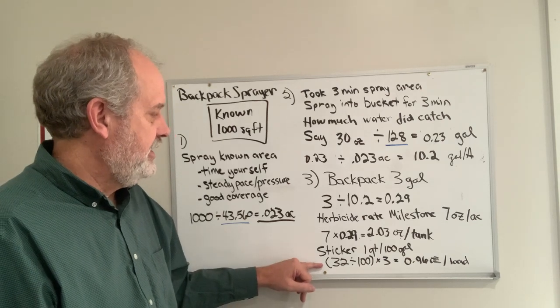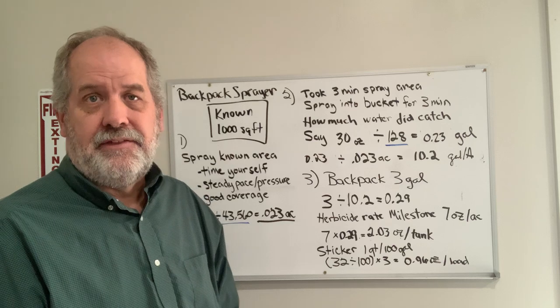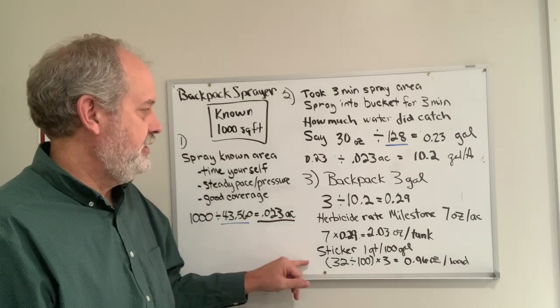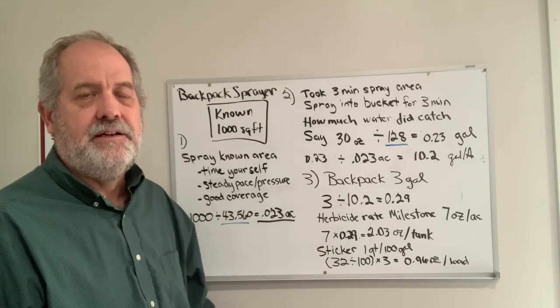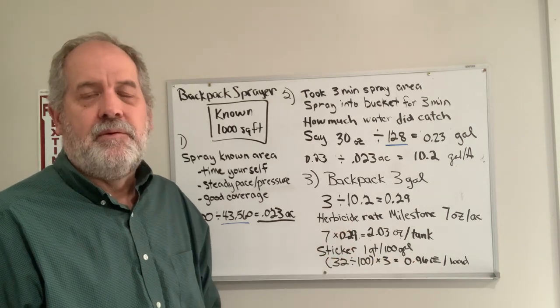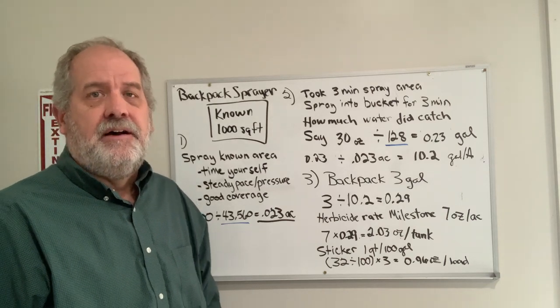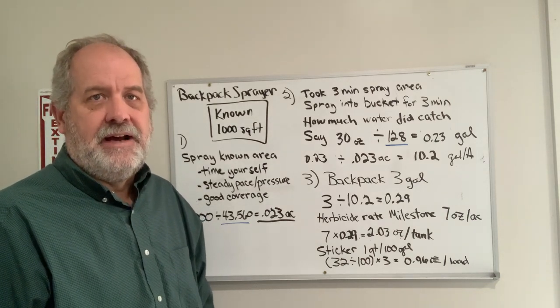To figure your sticker, you would figure a non-ionic surfactant, say 32 ounces per 100 gallons. Thirty-two divided by 100 times 3, the size of your backpack, tells you that you would put in roughly 0.96, roughly 1 ounce of surfactant in that 3 gallon backpack.